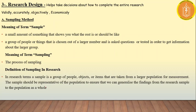We will determine what method to take — case study method, cohort studies, focus groups, longitudinal studies, cross-sectional studies. These are all things we determine in research design. Research design is something that helps take decisions about how to complete the entire research — regarding validity, accuracy, objectives, and economy.